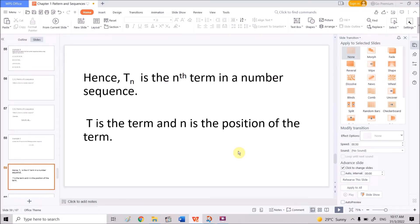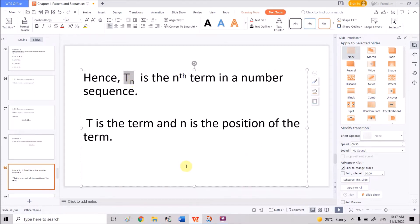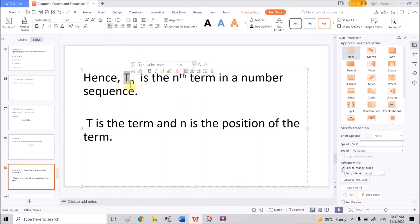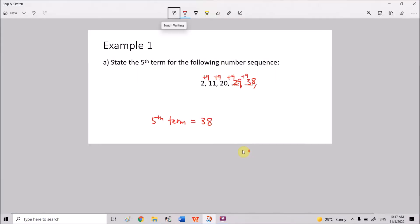Since you already understand the meaning of the term, we try to look at the symbol we use to represent the term. The symbol that we use is a capital letter T. And you will see there's an N here. The N refers to the nth term in the number sequence. So N here is the position of the term. Back to our example number 1 here, the fifth term can be represented by using a symbol which is T for terms. So the fifth term is T5, and it is equals to 38.